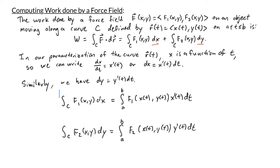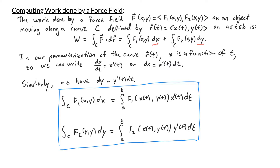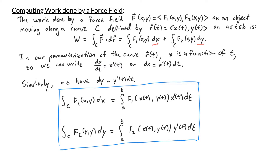With these two formulas we are now able to compute the work done by a force field on an object moving along a curve. Let's do some examples. In the first example, let f be the force field (-y, x). Suppose an object is moving along a line segment from (-1, -1) to (3, 7). Find the work done by the force field on this object.